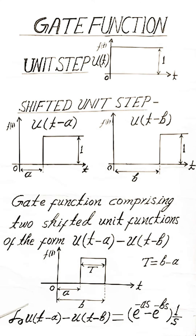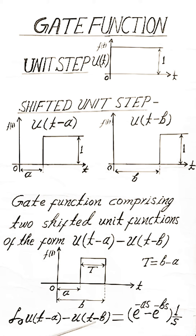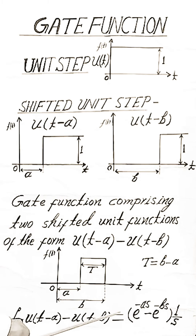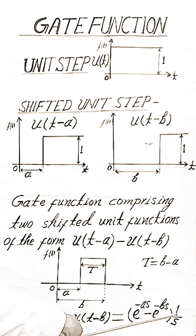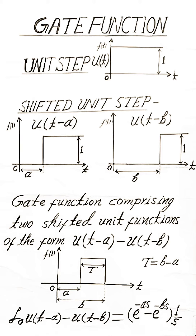The Laplace transform of the gate function — U(t-A) minus U(t-B) — is equal to: e^(-As) minus e^(-Bs), multiplied by one over s. Okay, thank you.